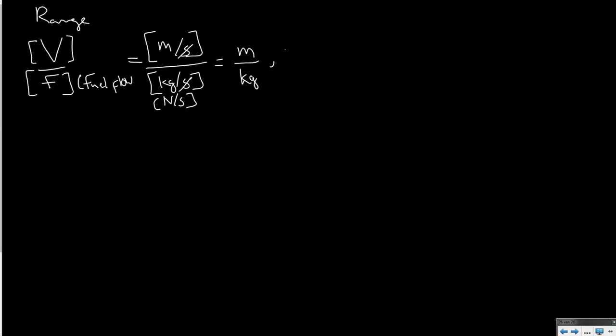For maximum range, we always try to optimize a parameter which we call specific range, and that is defined by the ratio of airspeed divided by the fuel flow. If you would look at the units of this equation, then you will see that this is essentially a speed, meters per second, divided by the fuel flow, and that can be expressed in either kilograms per second or by newtons per second. You can remove the second in the equation and you will find that the unit of this is either meters per kilogram or meters per newton.